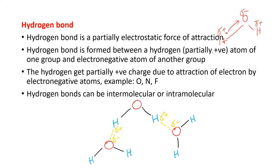The hydrogen gets partially positive due to the attraction of electrons by the electronegative atom. Examples of electronegative atoms are oxygen, nitrogen, and fluorine. These are the atoms that create such kinds of partially positive and electronegative atom signs.